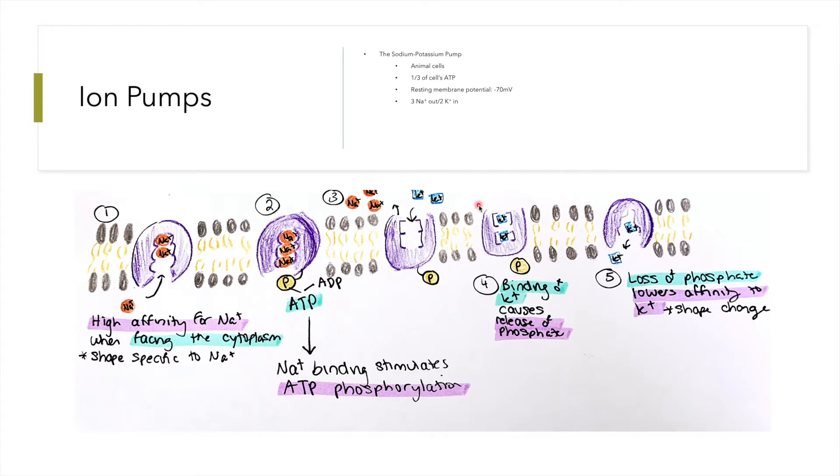Once the potassium ions bind to the pump, the phosphate is released and the affinity for potassium ions decreases, leading to its release on the inside of the cell. Then the cycle begins again. So three sodium ions are pumped out and two potassium ions are pumped in, which is why the membrane potential is negative.